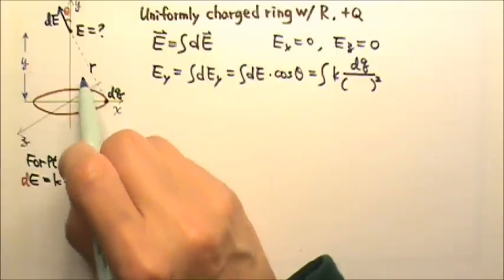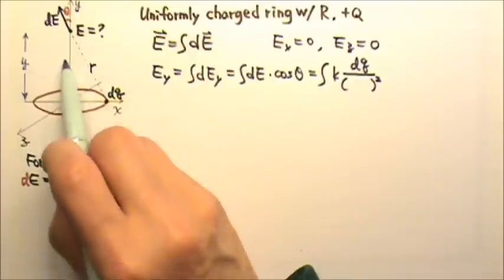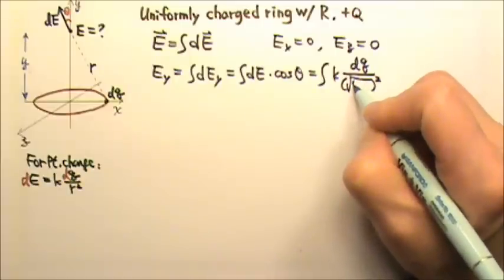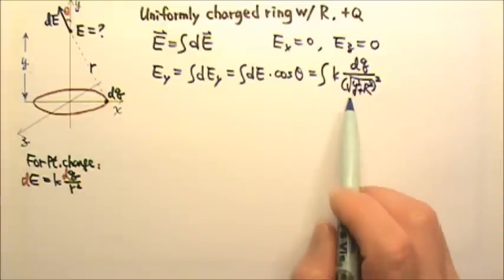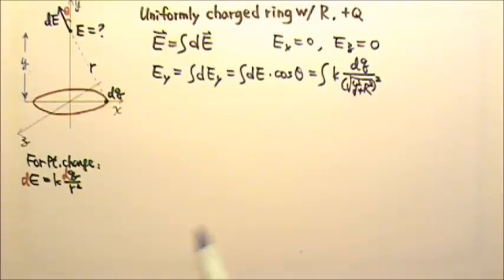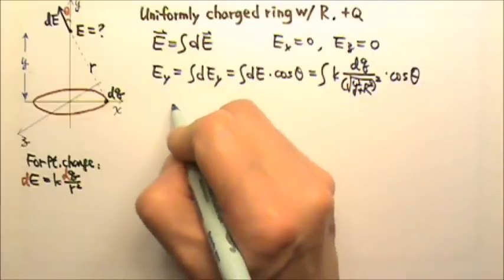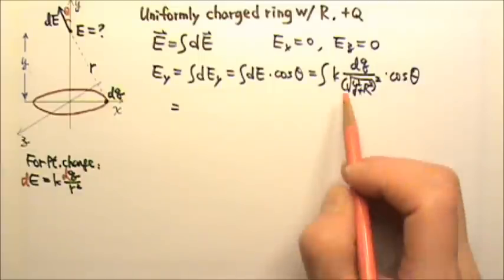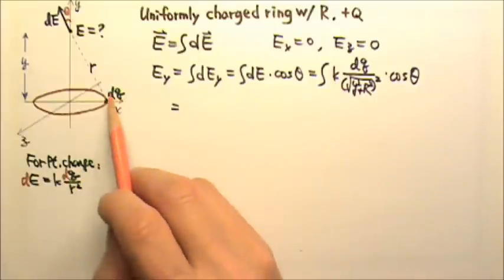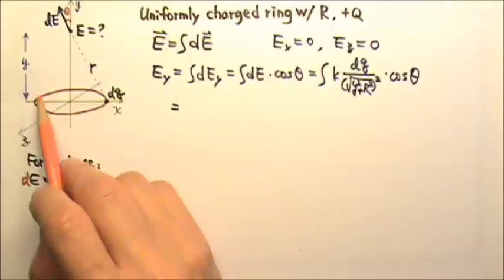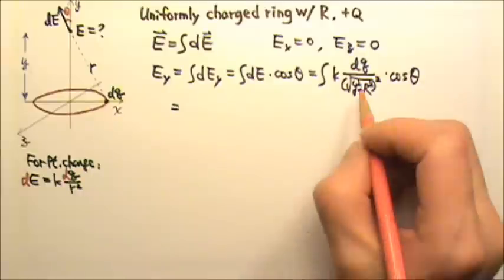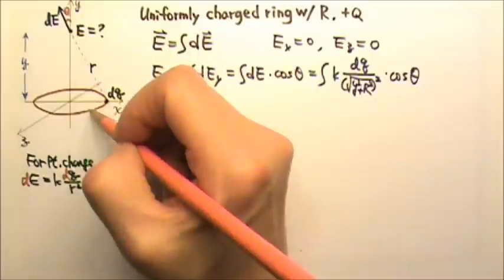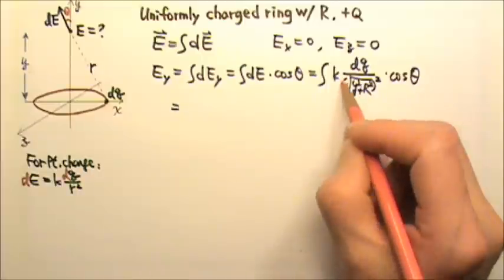The distance r is not given directly, but we can find it because we know the vertical distance is y and the ring radius is R. Using the Pythagorean theorem, r equals the square root of y squared plus R squared — the hypotenuse of this right triangle. This distance is the same for every dq on the ring, so r is a constant for this problem.